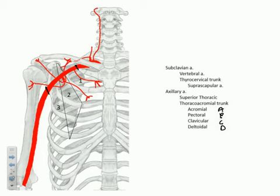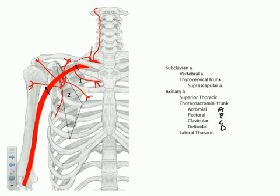The third branch overall — and the second branch off segment two — is the lateral thoracic. As the name implies, relative to the superior thoracic, the lateral thoracic continues down the lateral aspect of the thorax. We are in close proximity here to the long thoracic nerve that supplies serratus anterior.